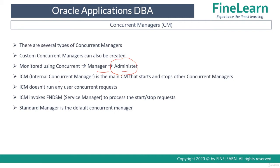The first important manager is the ICM, that is the Internal Concurrent Manager. The Internal Concurrent Manager is a very important concurrent manager because it starts and stops other concurrent managers. Remember that ICM does not run any user-specific requests — for example payroll-related requests or inventory reports. The only responsibility of ICM is to start and stop other managers, and it internally invokes FNDSM, that is the Service Manager, to do so.